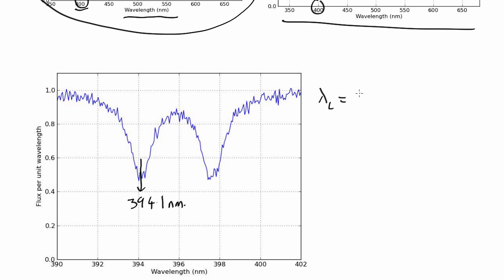So the shift, delta lambda, is 394.1 minus 393.3 equals 0.8 nanometers.